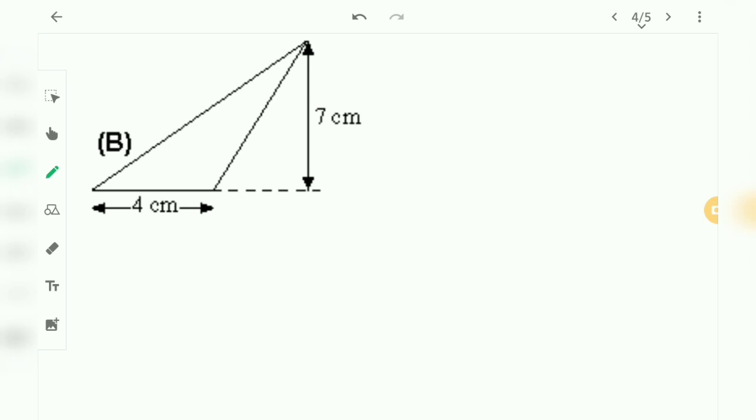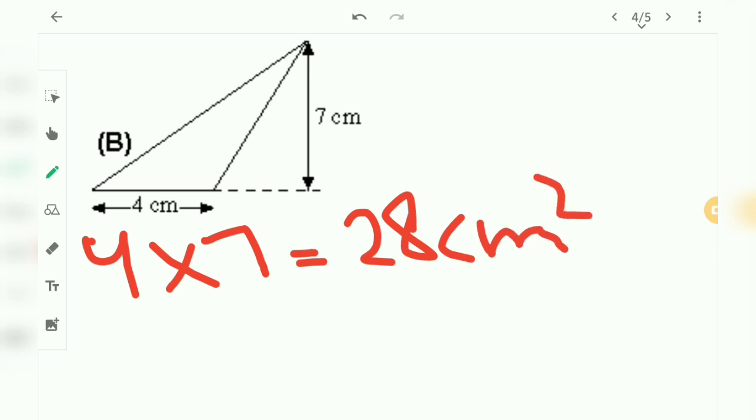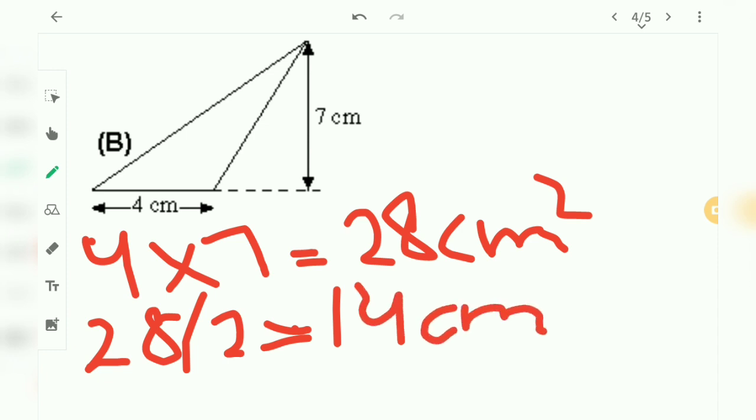So 4 into 7 gives us 28 cm squared. Now 28 divided by 2 gives us 14 cm squared. So that's the final answer, 14 cm squared. Let's move on to the next question.